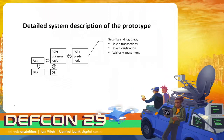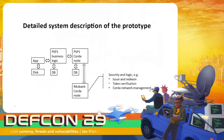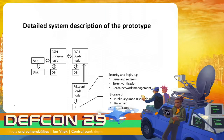The business logic communicates with the payment service provider's Corda node. The Corda node handles the security and logic of token transactions, token verification, and wallet management. The database of the Corda node needs to store user public keys, wallets, tokens, backchain — I will come back to what backchain is — and lots of certificates. At the Riksbank, there is also a Corda node, and the security logic there handles issue and redeem, token verification, and Corda network management. The information on that Corda node includes public keys, backchain, and certificates.